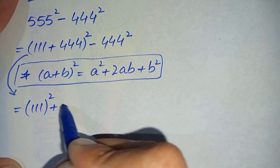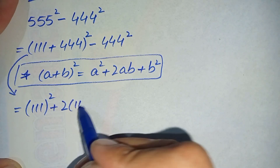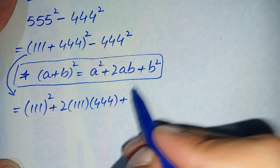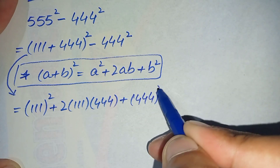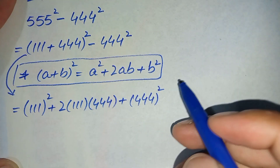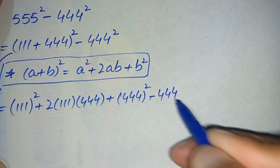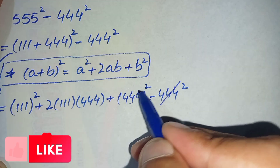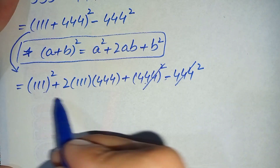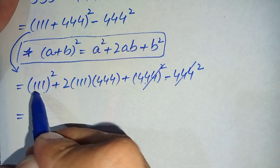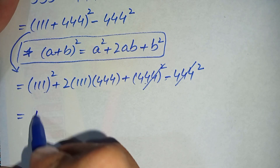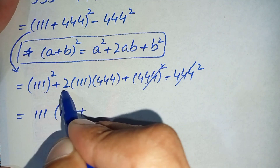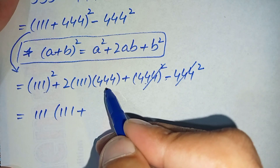Using the identity (a+b)² = a² + 2ab + b², this equation becomes 111² plus 2 times 111 times 444, plus 444² minus 444². This term is positive and this term is negative, so these two 444² terms cancel each other. Only the first two terms are left, and we take 111 as common from both.